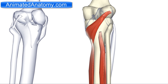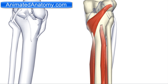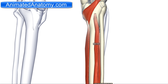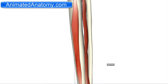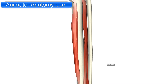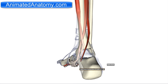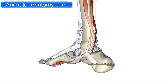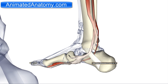Now I have added three muscles: the tibialis posterior, the flexor digitorum longus, and the flexor hallucis longus on the right. These three muscles go all the way down and pass underneath the flexor retinaculum of the ankle, and they create the so-called tarsal tunnel.